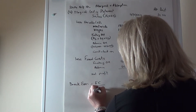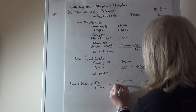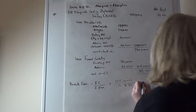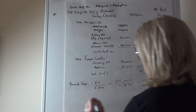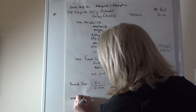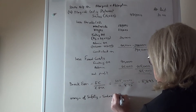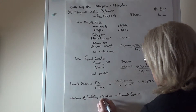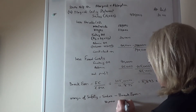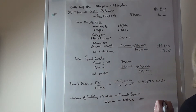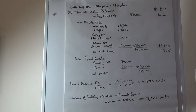The break-even point equals fixed costs over contribution per unit. Fixed costs are 105,000, so dividing by 11.875 tells me I need to make and sell 8,843 units to break even. The margin of safety equals sales minus break-even units: 16,000 minus 8,843 equals 7,157 units. That's the margin of safety in units, completing part A.